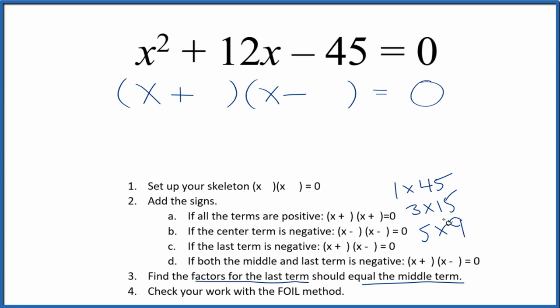So I'll put the 15 here because 15 times x will give me 15x. And the 3, I'll put that here because this x times 3 is negative 3x. So that'll give me the 12x. Let's check this with the FOIL method.